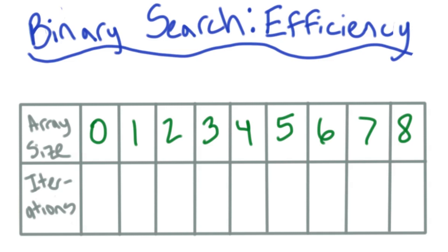I've created a table so we can take a good look at the array size versus the number of iterations of our algorithm. As we just saw, we had to go through our algorithm four times for an array size of 8. Again, we're talking about worst case here.